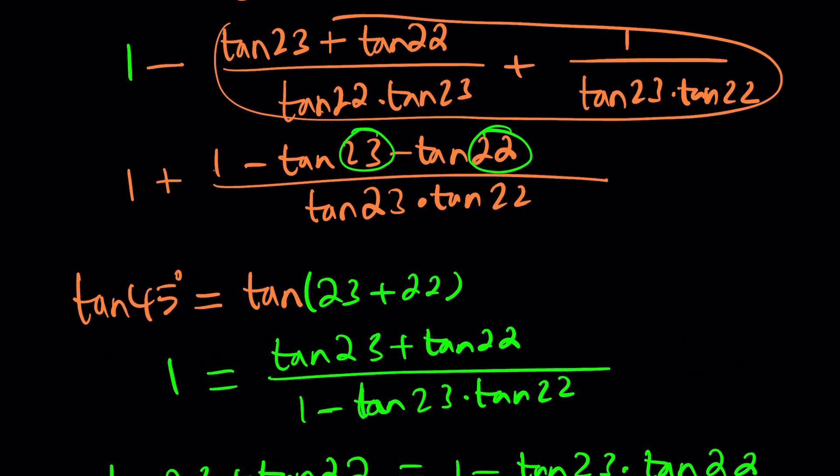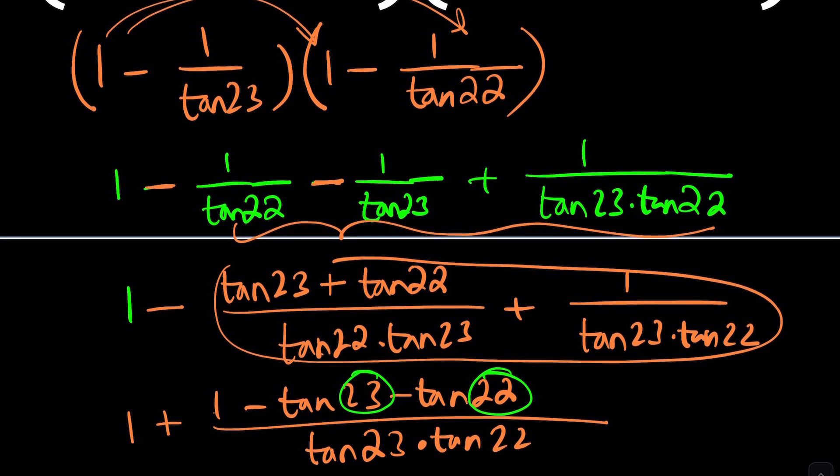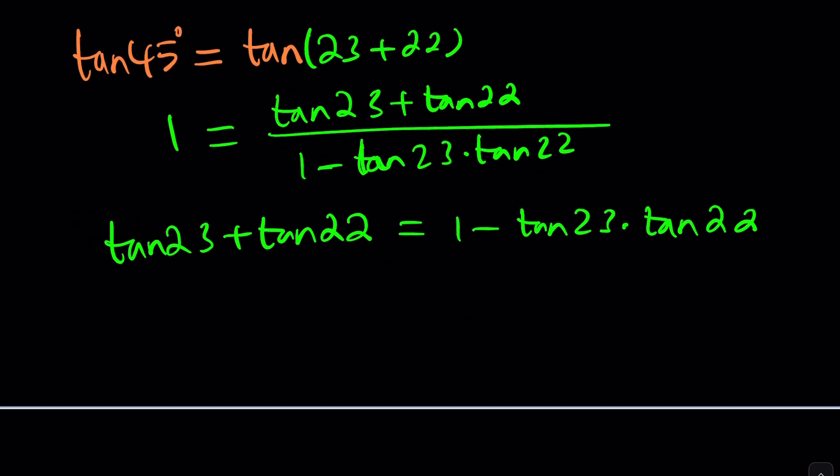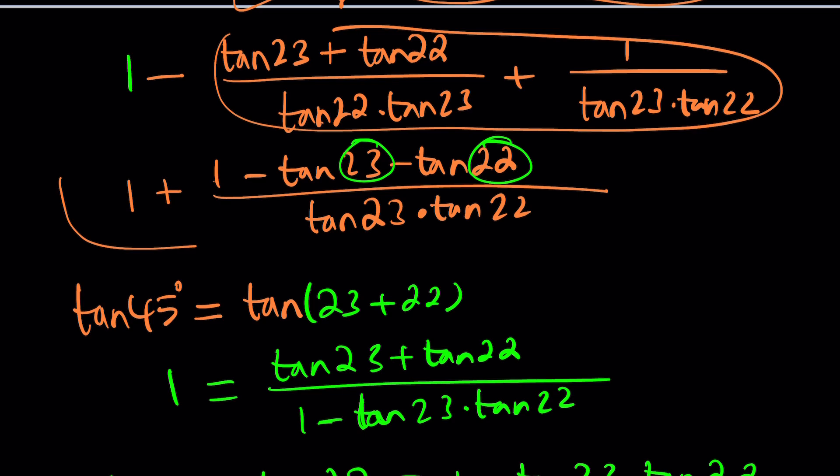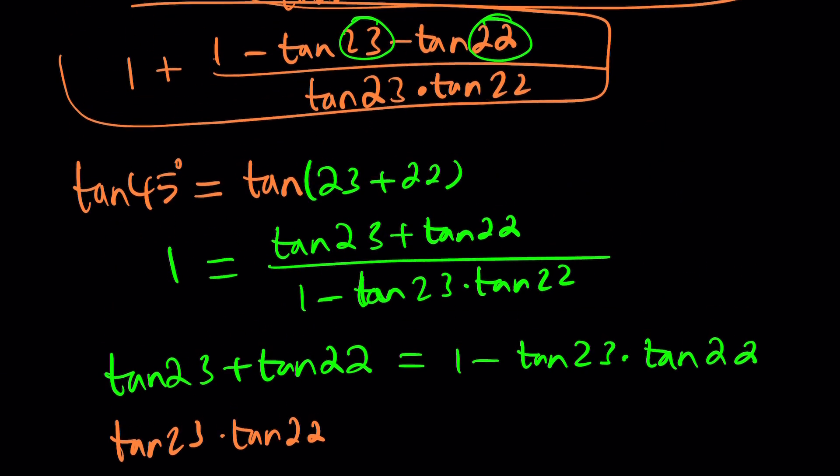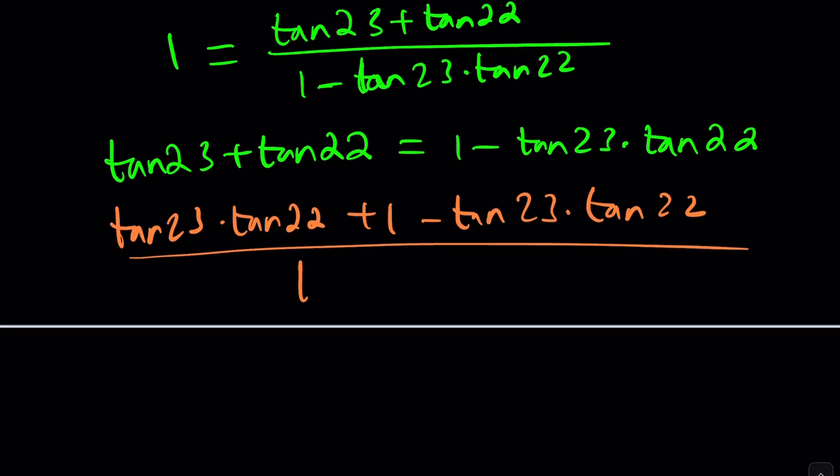Now what do we have? Let's go ahead and take a look at what we have. Maybe we should make a common denominator anyways. And when we do, we should get something like this. Let's make a common denominator here. Tangent 23. This one. Tangent 23 times 22, tangent 22, and then plus 1 minus tangent 23 times tangent 22 divided by tangent 23 times tangent 22. That's what I have so far.